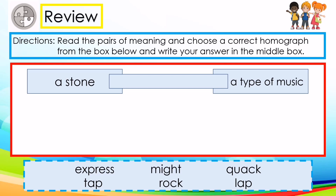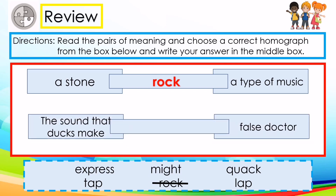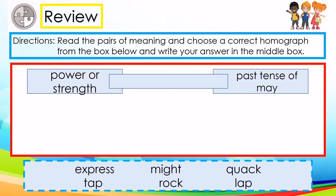The first meaning is 'a stone' and the second meaning is 'a type of music.' The correct answer is rock. Next, the first meaning is 'the sound that ducks make' and the next one is 'false doctor.' The correct answer is duck.